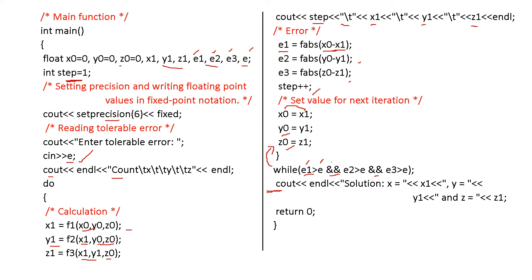Print solution is equal to, x is equal to x1, y is equal to y1 and z is equal to z1. This is the final answer. And then, return 0.